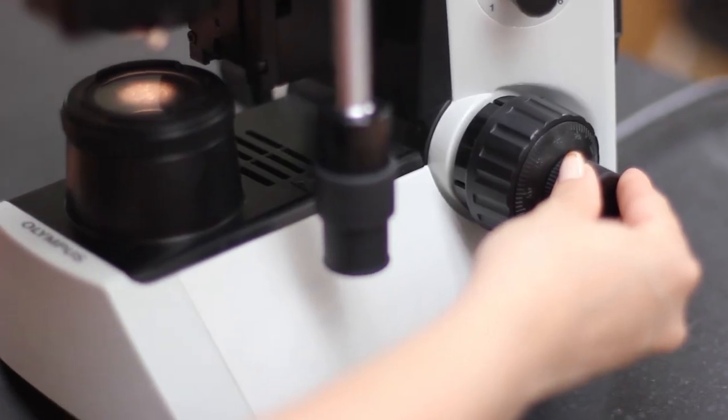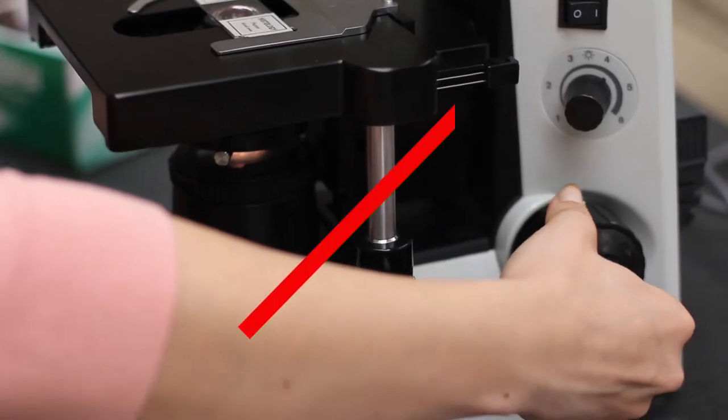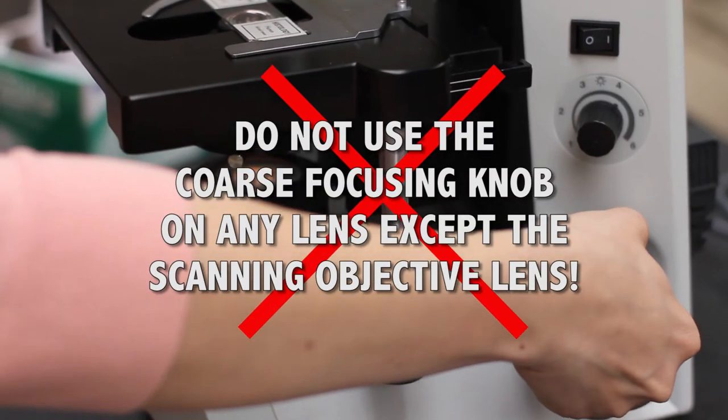The specimen, again, should be nearly in focus. Using only the fine focus knob, adjust the focus as necessary. Again, do not use the coarse focus knob on any lens except the scanning objective lens.